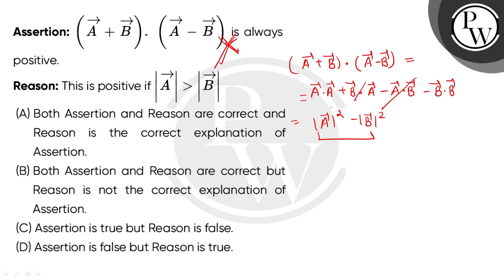When A's magnitude is greater, this quantity will be greater and the overall quantity will be positive. So the reason is true, but the assertion is false. Therefore, option D would be the correct choice. I hope you understand. Thank you so much.